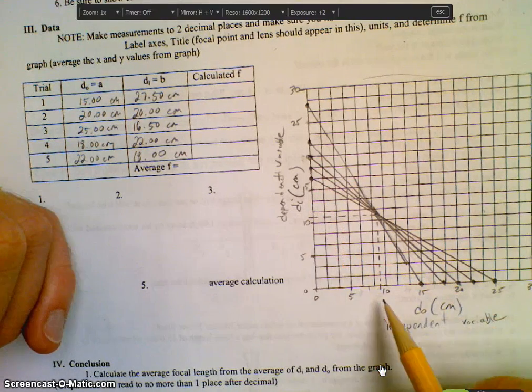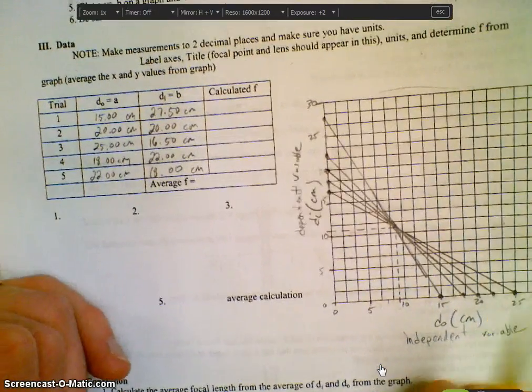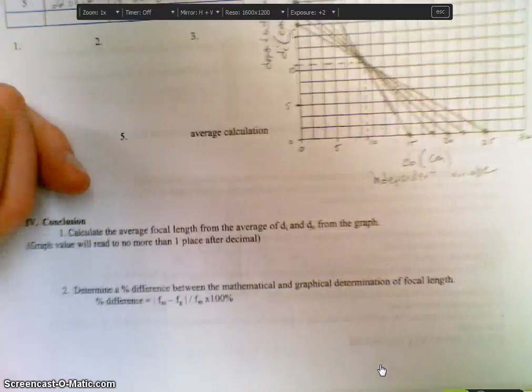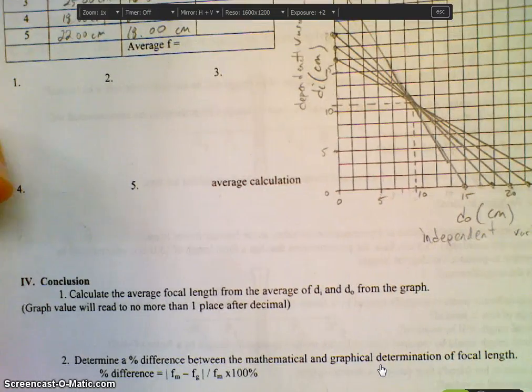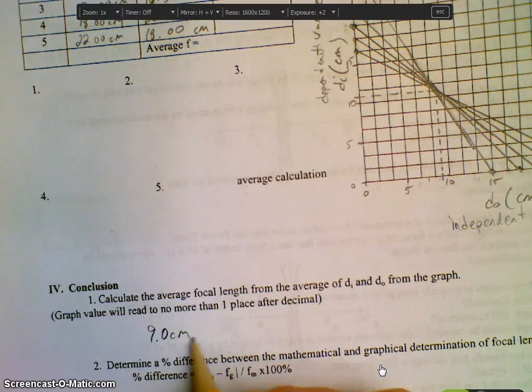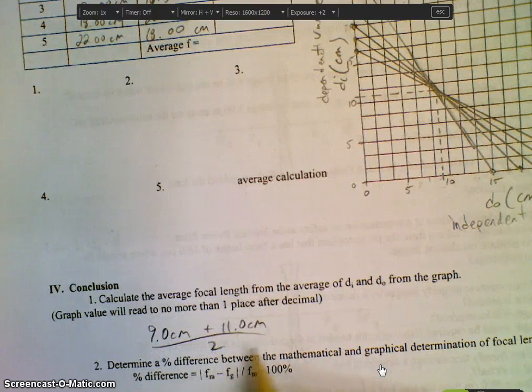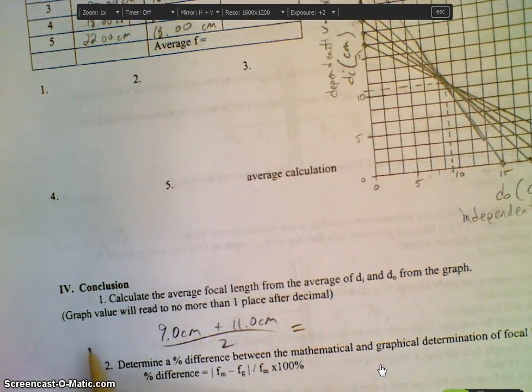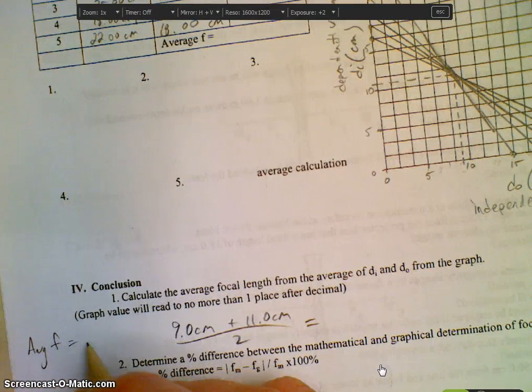So I'm going to call this 9 and this 11. So down here when I do my calculation of my average focal length, I've got, you can call it 9.0 centimeters and 11.0 centimeters. And again, set up a blank equation so we have average F equals F1 plus F2 over 2.